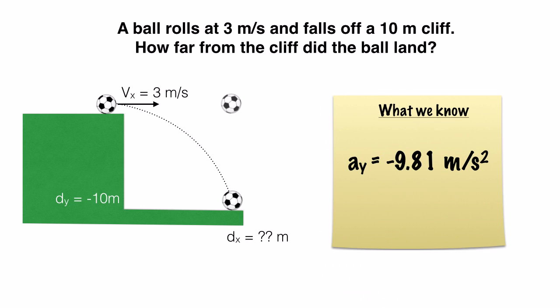The next thing is gravity is making this ball fall down. So we do have acceleration in the y direction. That's our negative 9.81 meters per second squared.